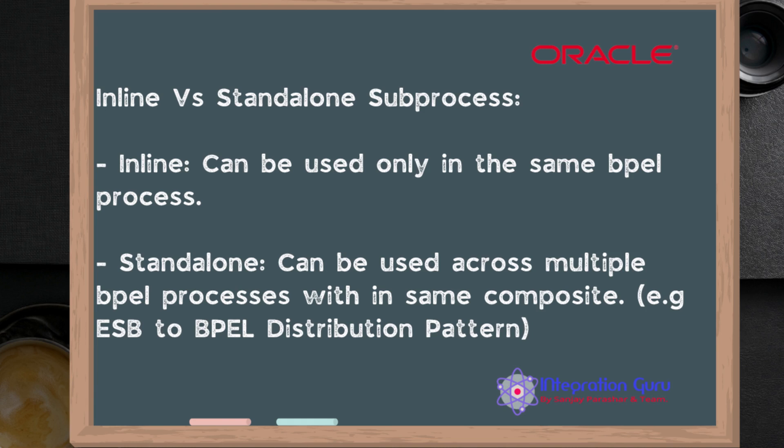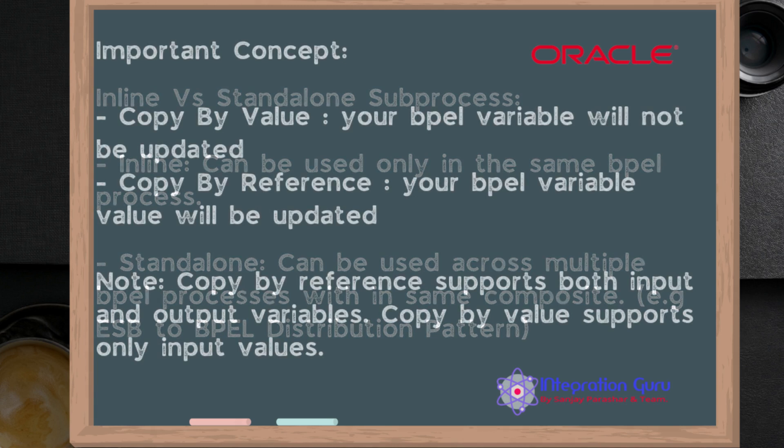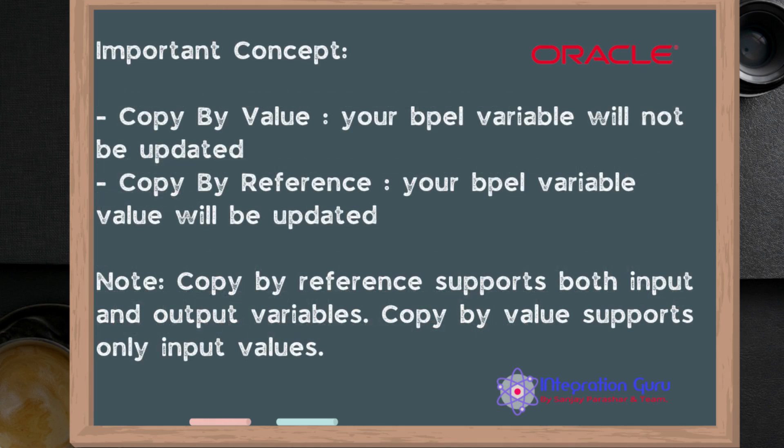Standalone subprocess is far more popular than inline subprocess. When working with standalone subprocess, there are a couple of important concepts to keep in mind: copy by value and copy by reference. It's similar to call by value and call by reference in almost all programming languages. In simple terms, if we use copy by value, only the value will be assigned to the variable and your original people process variable will not be updated. If you don't use copy by value, your original people variable value will be updated — like sending the value versus sending the memory address.